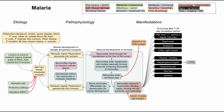A number of gastrointestinal symptoms can also occur with malaria, including nausea, vomiting, diarrhea, and abdominal pain. Hepatosplenomegaly can develop and manifest on liver function tests as the liver is affected by the parasite, and jaundice may appear as well.